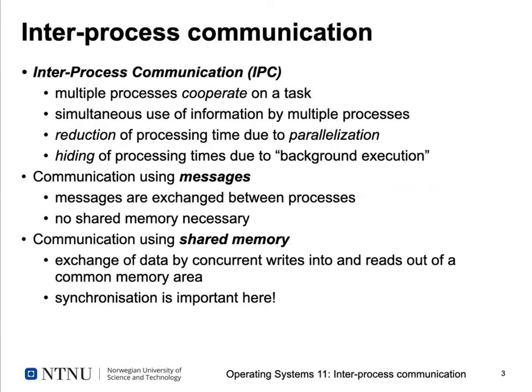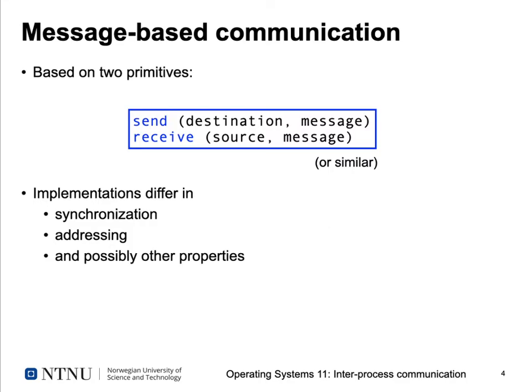There are two ways to exchange data between processes. One is message passing: messages are items of information exchanged between processes — like sending a letter — requiring no shared memory. The other is shared memory communication, where processes write to and read from a common memory area. Synchronization is critical for shared memory approaches.